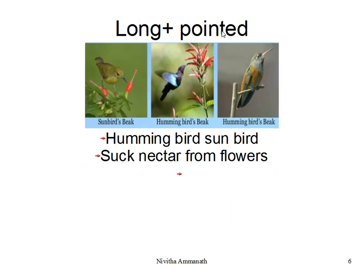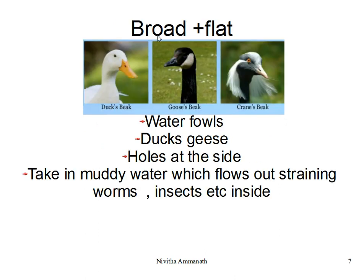Long and pointed beaks can be seen in hummingbirds and sunbirds. They help to suck the nectar from the flowers. Long and pointed beaks help to suck the nectar from the flowers in hummingbirds and sunbirds.